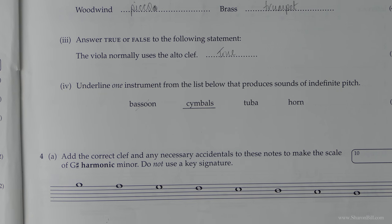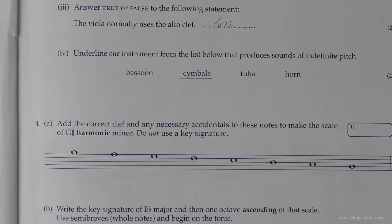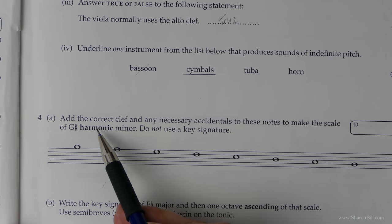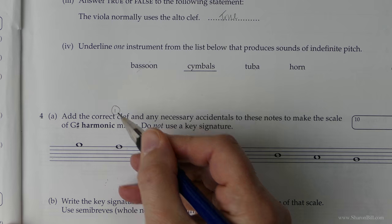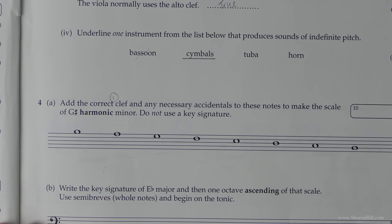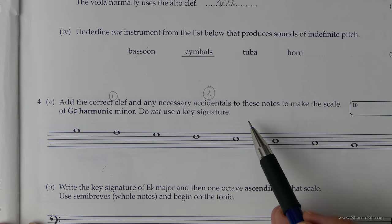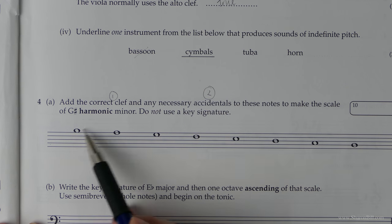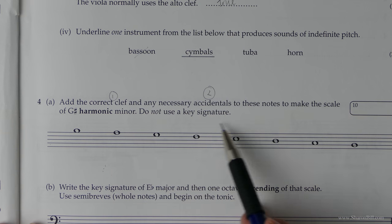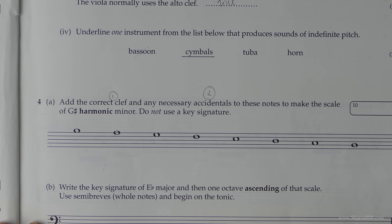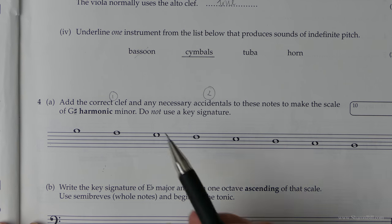Here we go then. Let's have a go at this next question. So it asks us to add the correct clef. So that's part one. And any necessary accidentals. Part two. To make this scale of G-sharp harmonic minor. It says do not use a key signature. We still need to bear a key signature in mind. But first of all, let's deal with the clef.